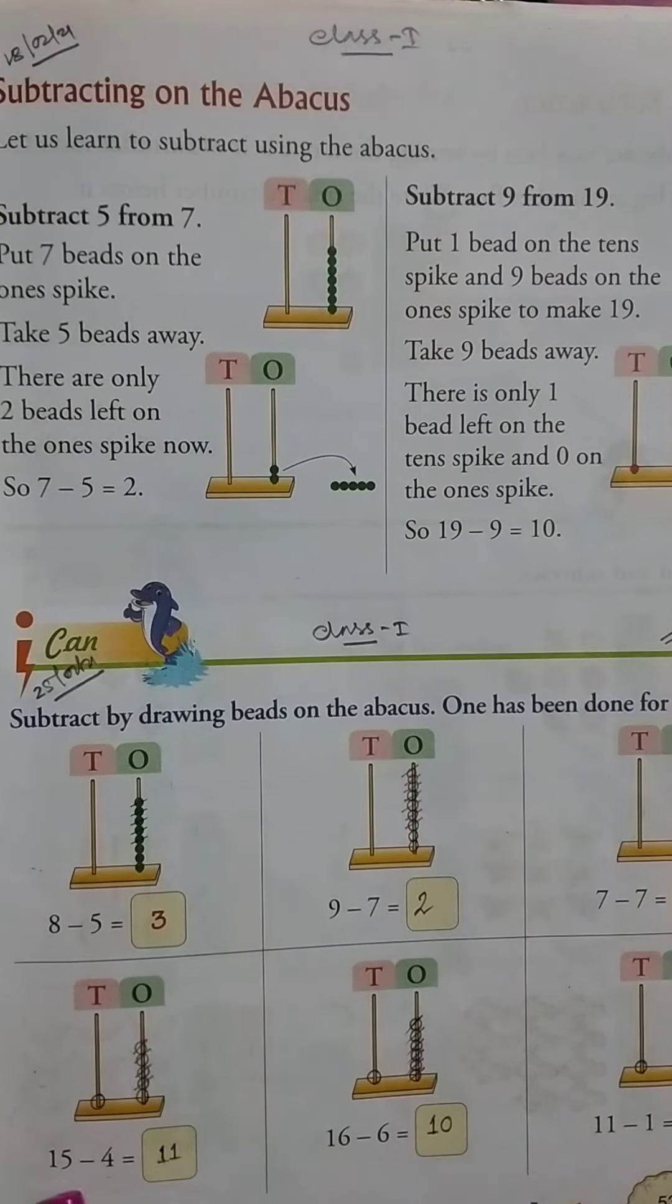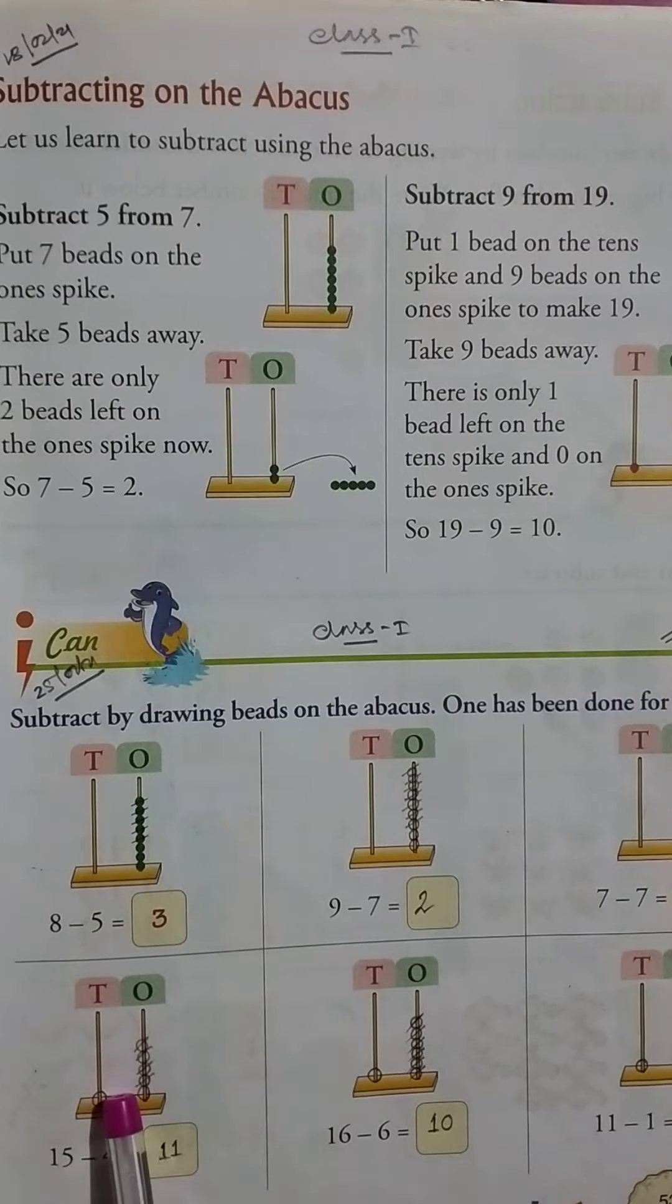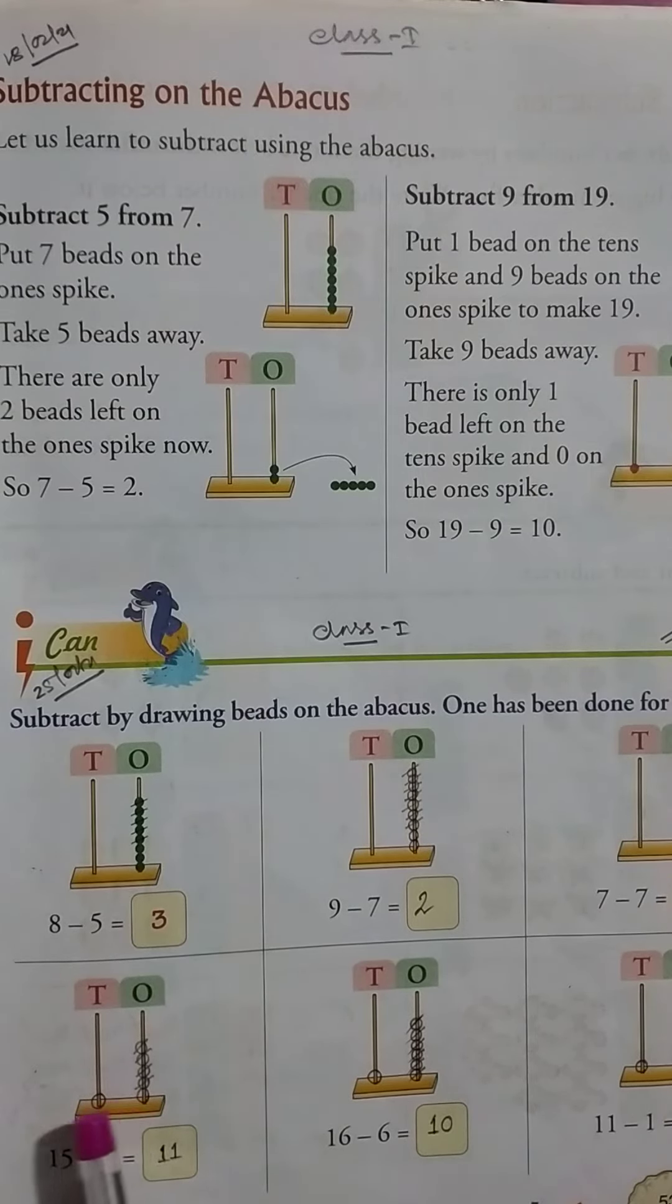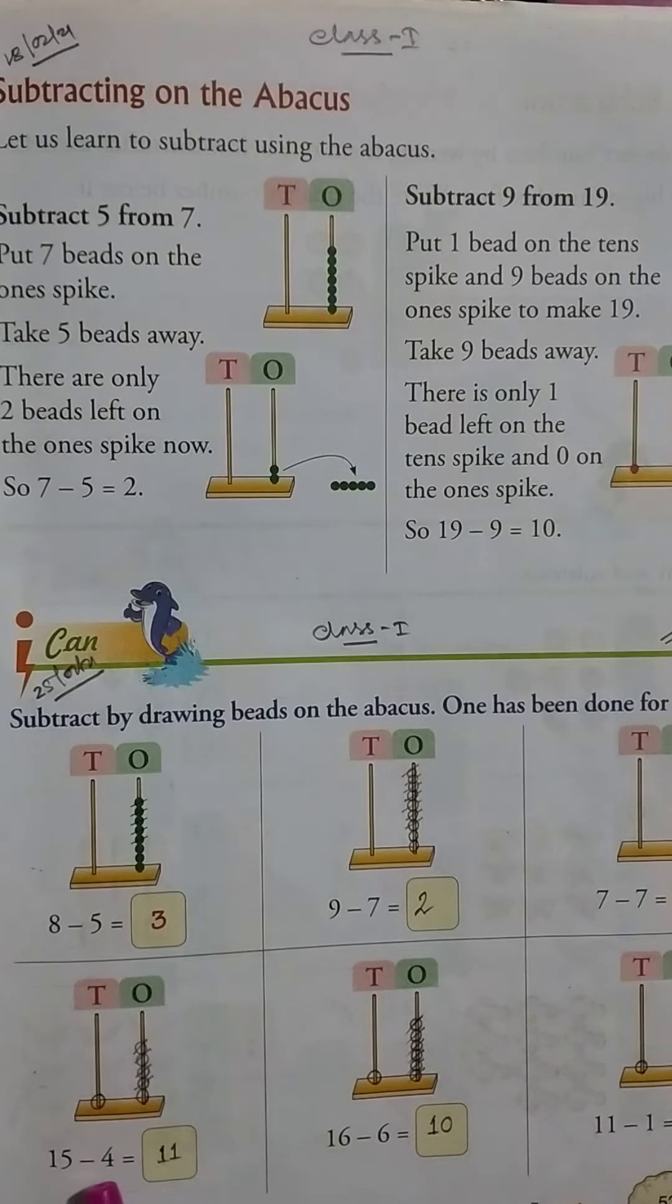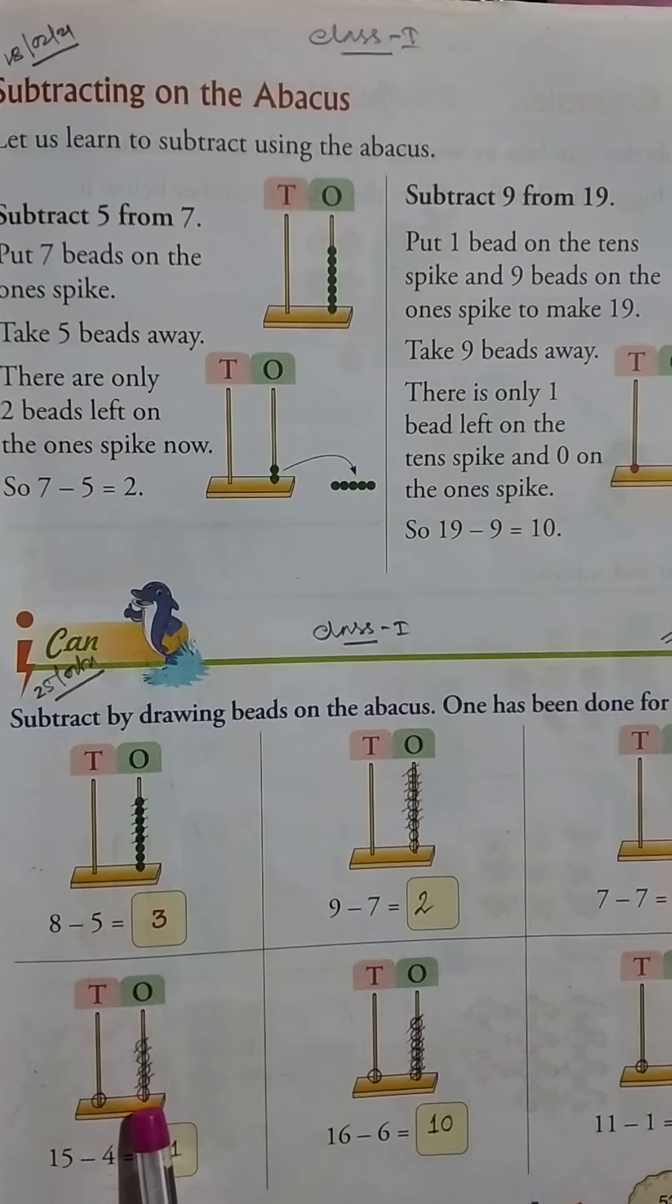Now look at this: 15 minus 4. Firstly, put one bead on the tens spike and 5 beads on the ones spike to make 15. Then take 4 beads away. There is only one bead left.